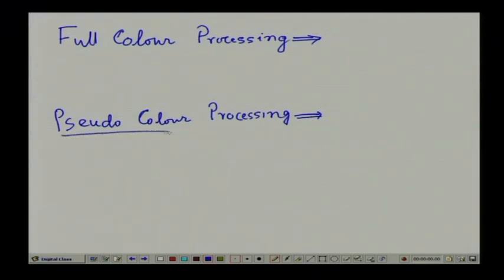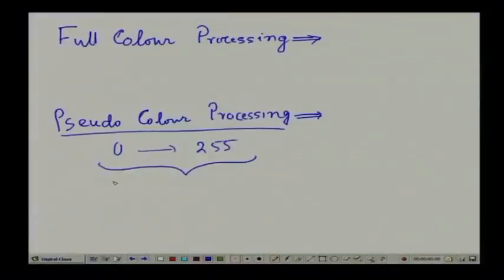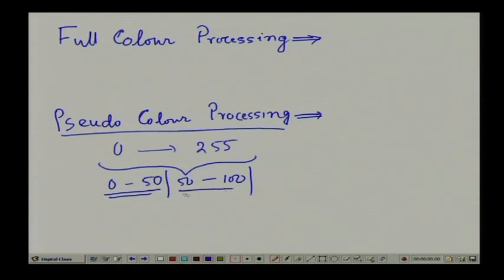Whereas in pseudo colour processing, the problem is where we try to assign certain colours to a range of grey levels. When we take an intensity image or a black and white image with intensity levels from 0 to 255, we can divide this entire intensity range into a number of sub-ranges. For example, intensity levels 0 to 50 in one range, 50 to 100 in another range, and to each range we assign a particular colour. This pseudo colour image processing is mostly useful for human interpretation.